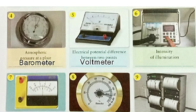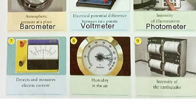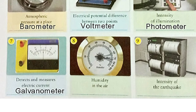Now let's see our question number 6. This instrument is used to measure intensity of illumination. It is photometer. Now let's see our question number 7. This instrument is used to detect and measure electric current. It is galvanometer. Write the name here. Now let's see our question number 8. This instrument is used to measure the humidity in the air. It is hygrometer.